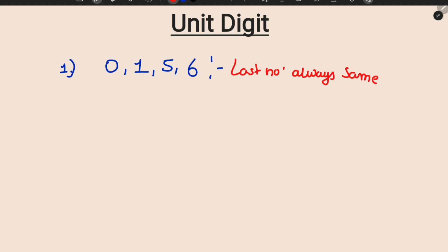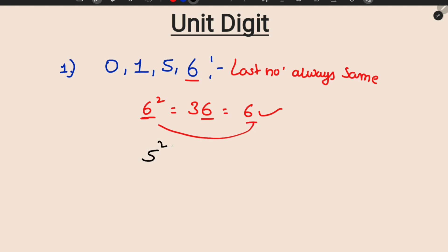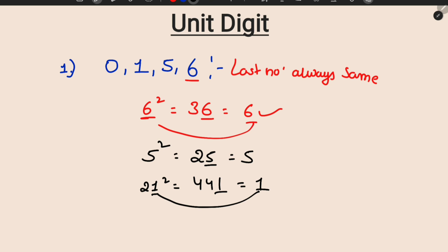Why is the last number always the same? For example, if you have a number ending in 5, five squared is 25 — last digit is still 5. The same digit is repeated. These numbers are 0, 1, 5, 6. So this is the unit digit property for these four digits.